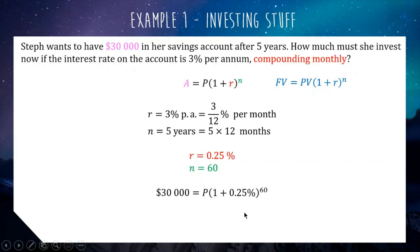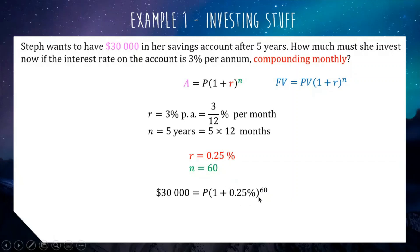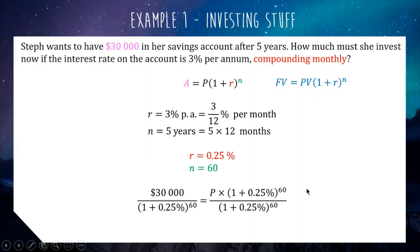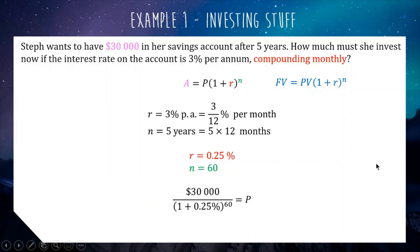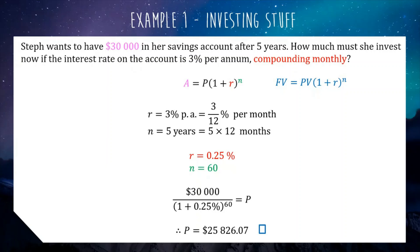We end up with this formula: $30,000 equals principal times (1 + 0.25%) to the power of 60. This is a little equation we need to solve for P. This term — 1 plus blah blah blah — is really just a number, and it's a number that's multiplying with P. So the smartest thing to do is divide both sides of the equation by this number, which cancels it away and leaves just P. So to figure out our starting amount, we put into our calculator: 30,000 divided by (1 + 0.25%) to the power of 60, and we get an answer of about $25,826.07. Always a good idea to round to the nearest dollar. That should be our final answer — full marks.